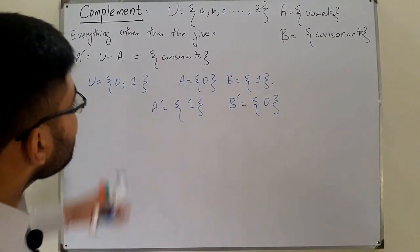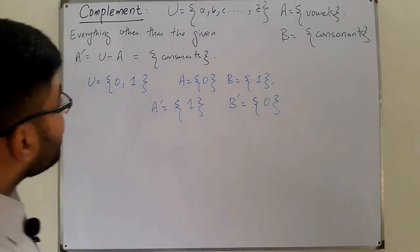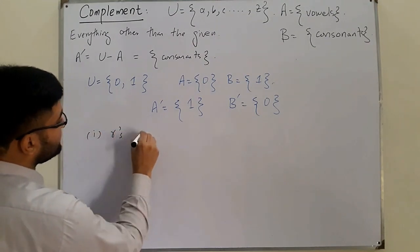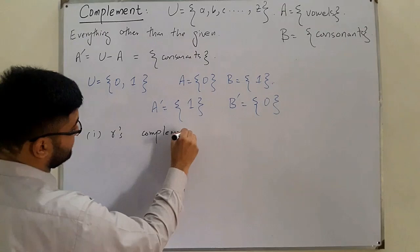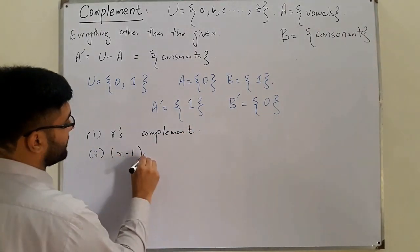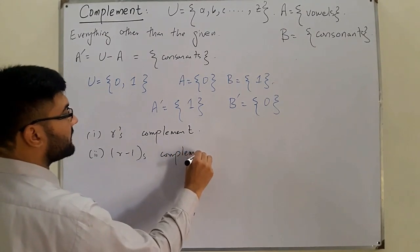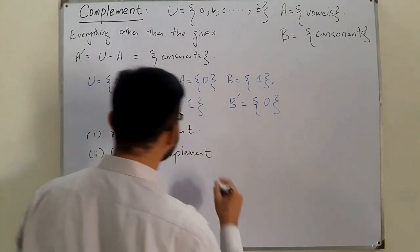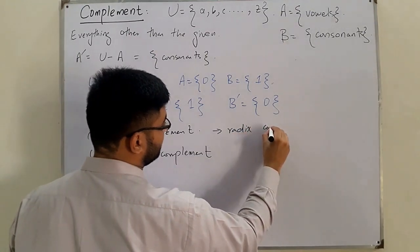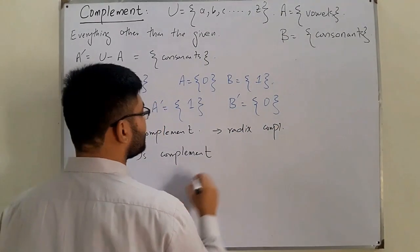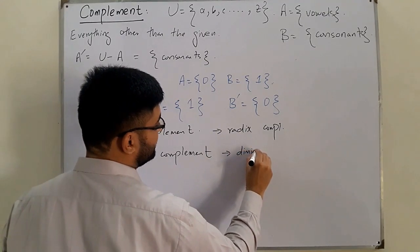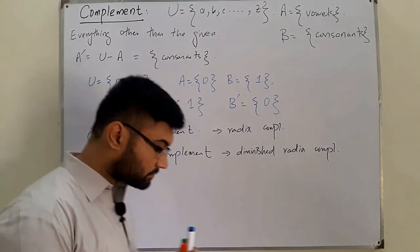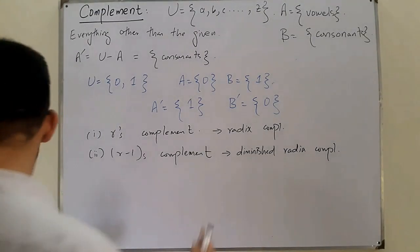Similarly, we have complements for numbers, and they are of two types: number one is the R's complement, and the second is the R-minus-1's complement. This R's complement — where R stands for the base — is called the Radix complement. And this R-minus-1's complement is called the Diminished Radix complement.